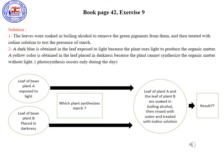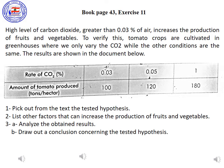Pause the video and copy the solution on your copybook. Now open your book page 43, exercise 11. High levels of carbon dioxide — greater than 0.03% of air — increase the production of fruits and vegetables. To verify this, we are proving that high levels of carbon dioxide increase the production of fruits. This whole experiment is designed to prove this hypothesis.